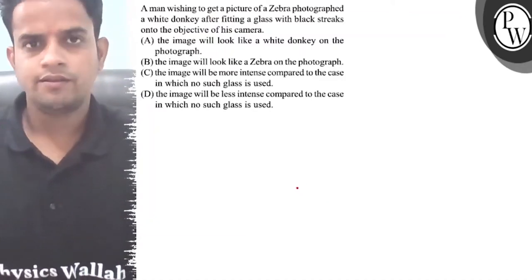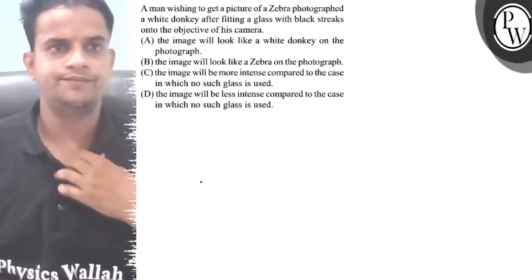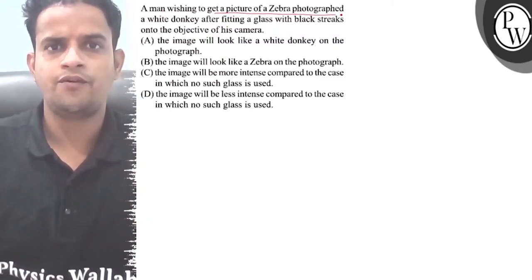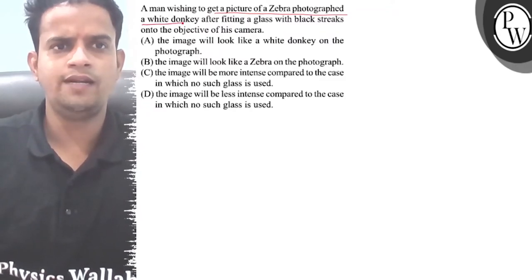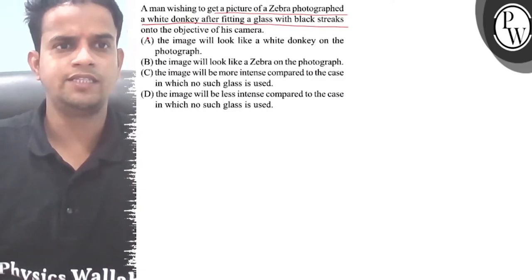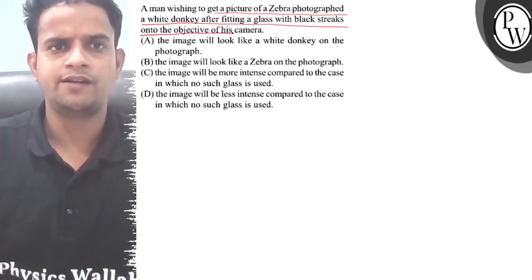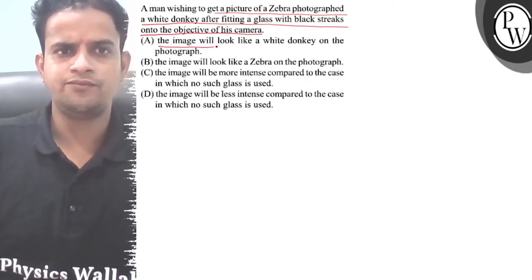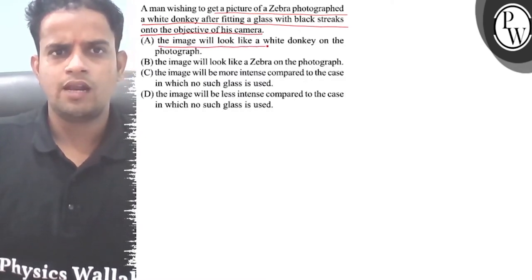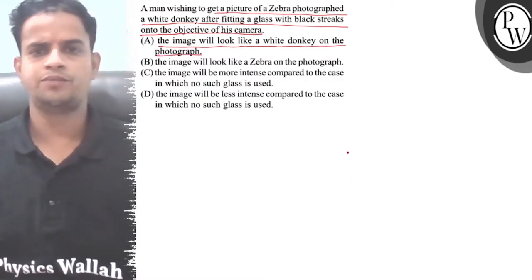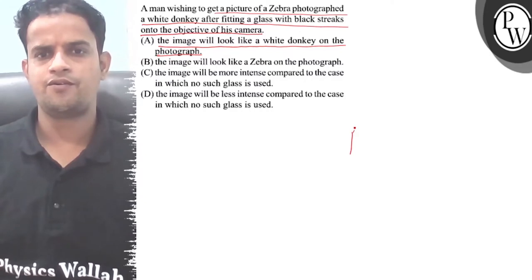Let's consider this question: a man wishing to get a picture of a zebra photographed a white donkey after fitting a glass with black stripes onto the object side of his camera. To get the image, will it look like a white donkey on the photograph? A photograph is the same as a representation.